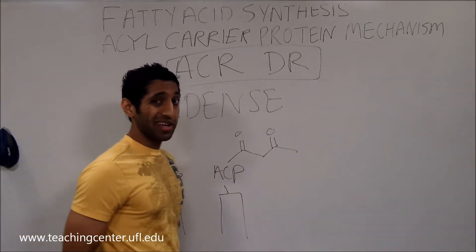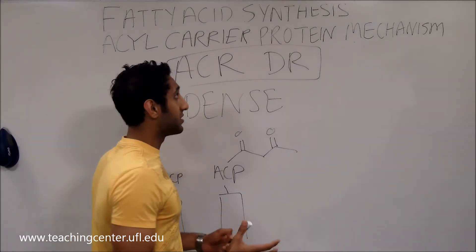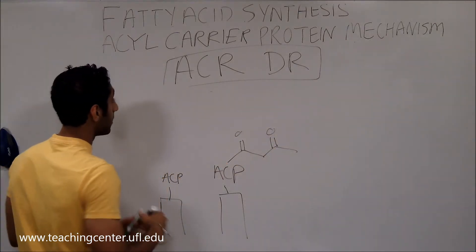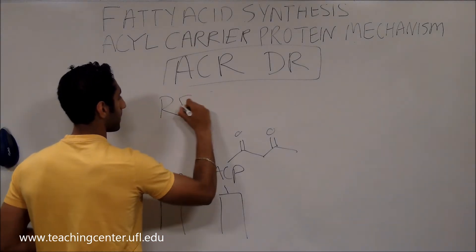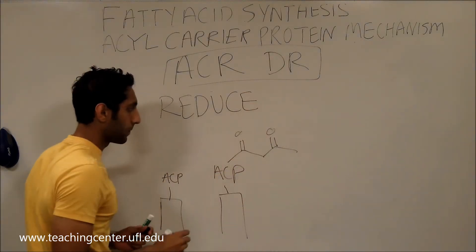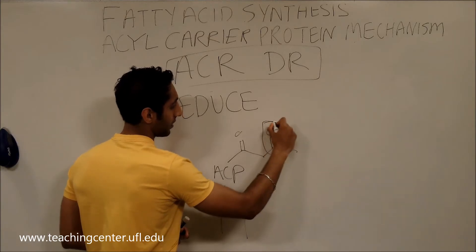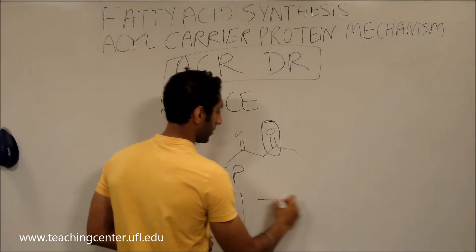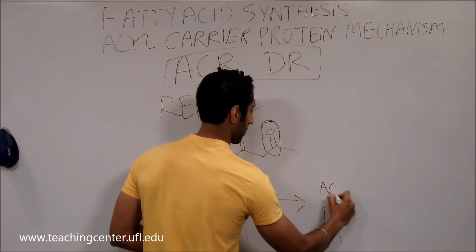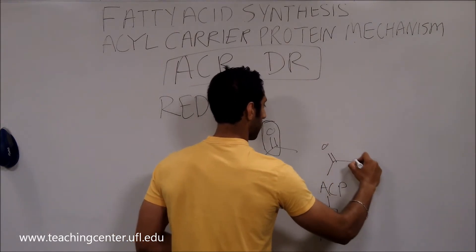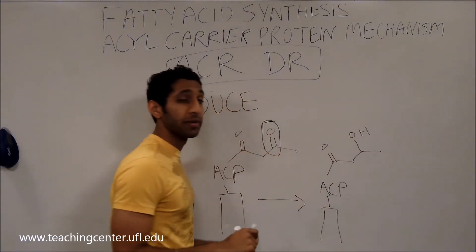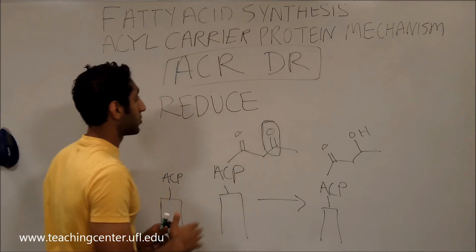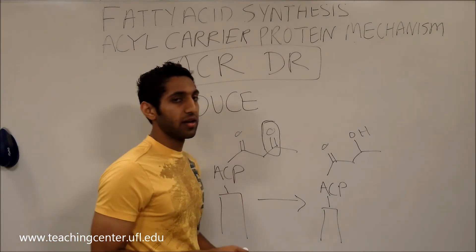This doesn't exactly look like a fatty acid yet, so what the enzyme needs to do is reduce. The thing it's going to reduce is the carbonyl group, and it reduces it using NADPH. As you may remember from organic chemistry, when you reduce a carbonyl group, it converts it to a hydroxyl group or an alcohol. So now it's starting to look somewhat like a fatty acid.